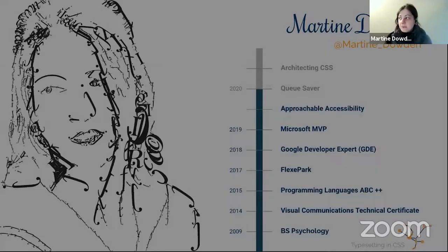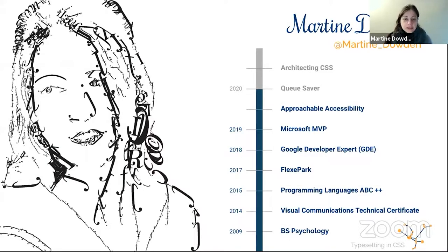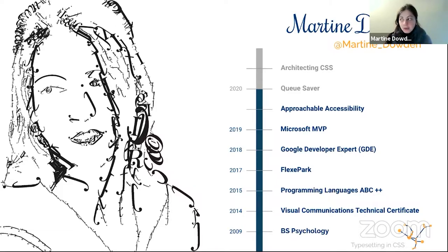I'm Martine Dowden. I'm currently the CTO of Andromeda where we do our own personal projects as well as consulting, mostly focusing on project development, creating MVPs and products from the ground up, as well as accessibility.